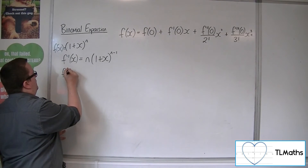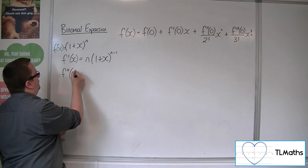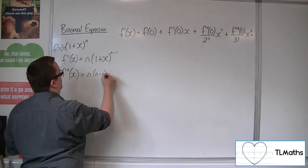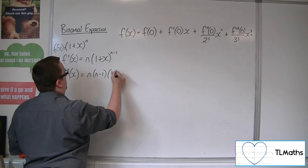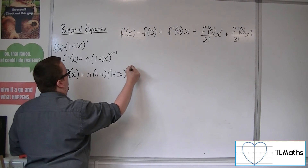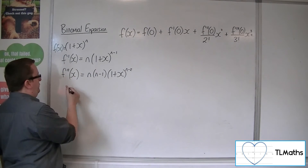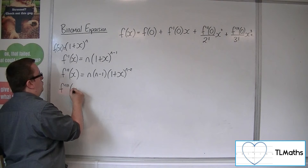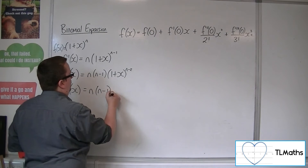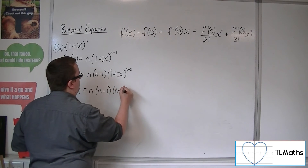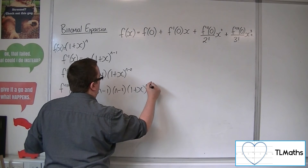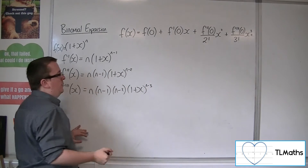For the second derivative, the n minus 1 comes down to the front, the derivative of what's inside comes outside, then take 1 off the power, giving n(n−1)(1+x)^(n−2). For the third derivative, the n minus 2 comes down to the front, the derivative of 1 plus x comes outside, take 1 off the power, giving n(n−1)(n−2)(1+x)^(n−3).